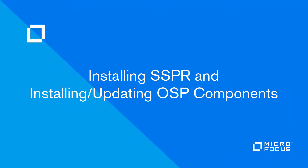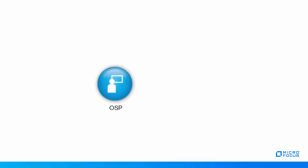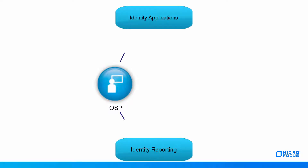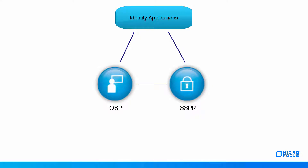This video provides an overview of installing the single sign-on and password management components. These components help you configure Identity Manager for single sign-on access and for allowing users to reset their passwords. Identity Manager uses OSP as the authentication service to provide single sign-on access to Identity Applications and Identity Reporting. SSPR integrates with the Identity Applications and OSP for helping users who have access to the Identity Applications to reset their passwords without administrative intervention.